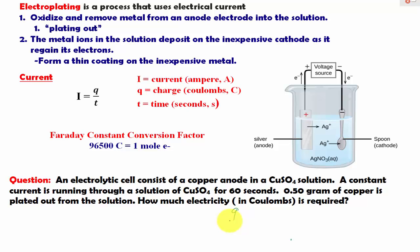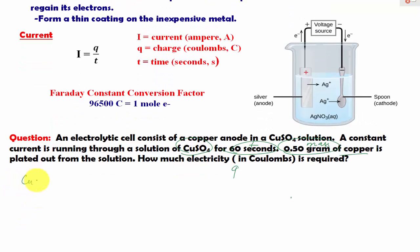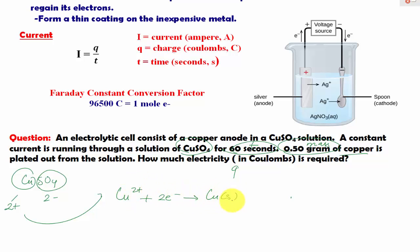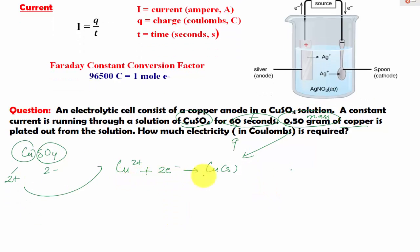First of all, what are we given? We are given time, and we are given the mass of the metal, copper. And we are given hints about copper in terms of copper sulfate. From copper sulfate, since sulfate has a charge of 2 minus, copper must have a charge of 2 plus. We can write the half-cell reaction: Cu²⁺ + 2e⁻ → Cu(s), which in this case is exactly 0.5 grams. So we are given this in grams.